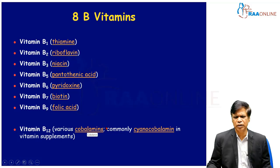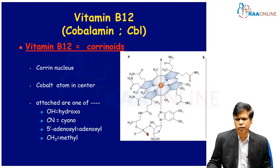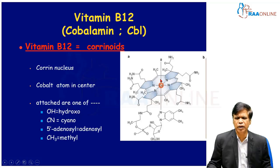The chemical name is cobalamin. It is commonly presented as cyanocobalamin in supplements, but presently we also get hydroxycobalamin and methylcobalamin available for prescription. Vitamin B12, cobalamin, needs an important transition metal called cobalt. It has a corin nucleus with a cobalt atom in the center, and attached to this is one of the side chains. Depending upon the side chains, it gets the name hydroxycobalamin or cyanocobalamin, which are available in nature.